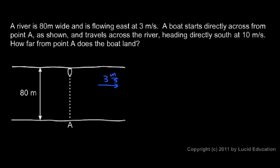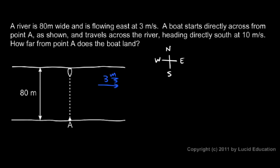A boat starts heading directly across from point A — here's point A down here on the riverbank. The boat is directly across from point A where it starts, and it travels across the river heading directly south. That means the boat is going to be pointing to the south as it travels across the river, which is down in our diagram. The boat stays pointing down the whole time. How far from point A does the boat land?